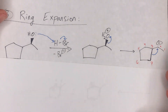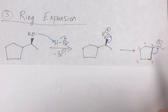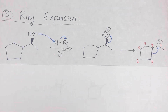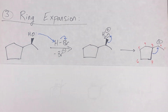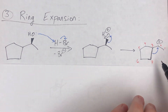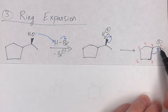Whenever you see a carbocation adjacent to a ring, alarms should go off — there could be a ring expansion. Small rings like 3-, 4-, or 5-membered rings can break and create a larger ring that is more stable. A larger ring is lower in energy than a smaller ring, so it's energetically favorable. Here, carbon seven (from the 5-membered ring) binds to carbon two, breaking the bond between carbon three and seven, and both those electrons move to carbon two — creating a six-membered ring.